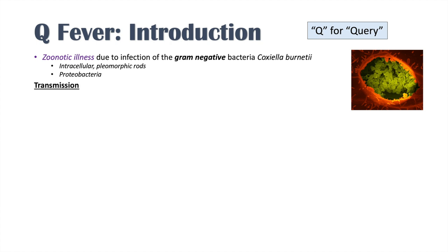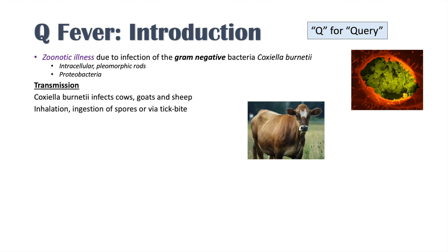Transmission of this bacteria can occur as follows. Coxiella burnetti is a bacteria that infects cows, goats, and sheep, but it can infect other animals and humans by inhalation and ingestion of spores of the bacteria, or via a tick bite — the tick can carry the bacteria and then infect an individual. Also, ingestion of raw milk and/or goat cheese may infect individuals as well.